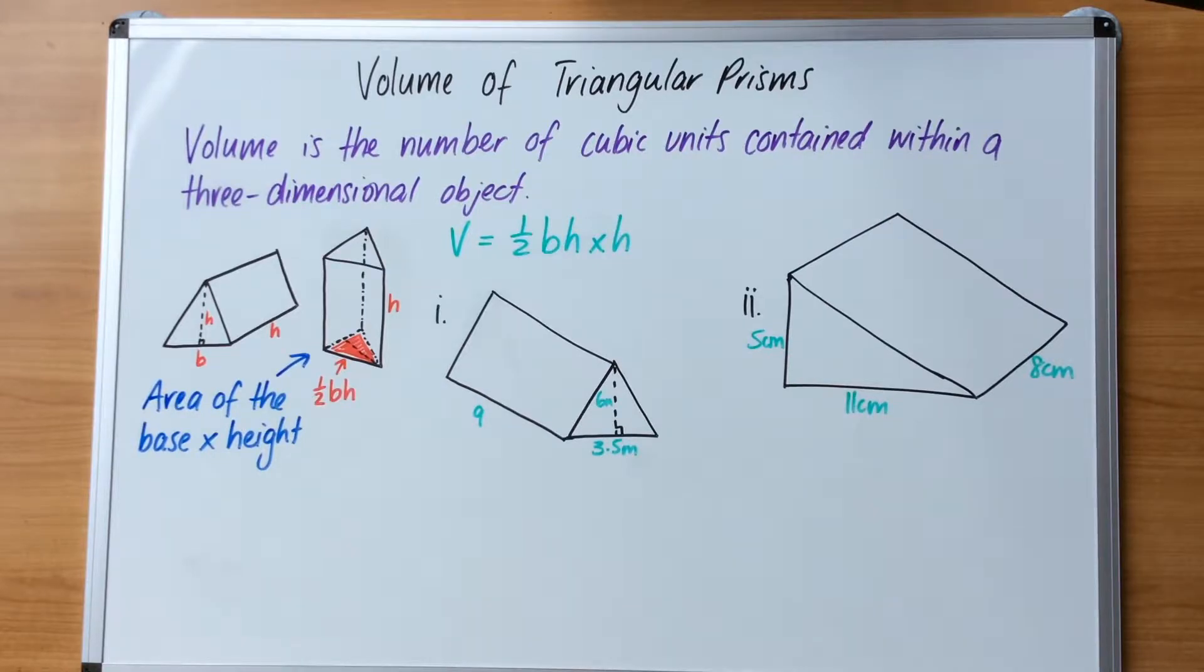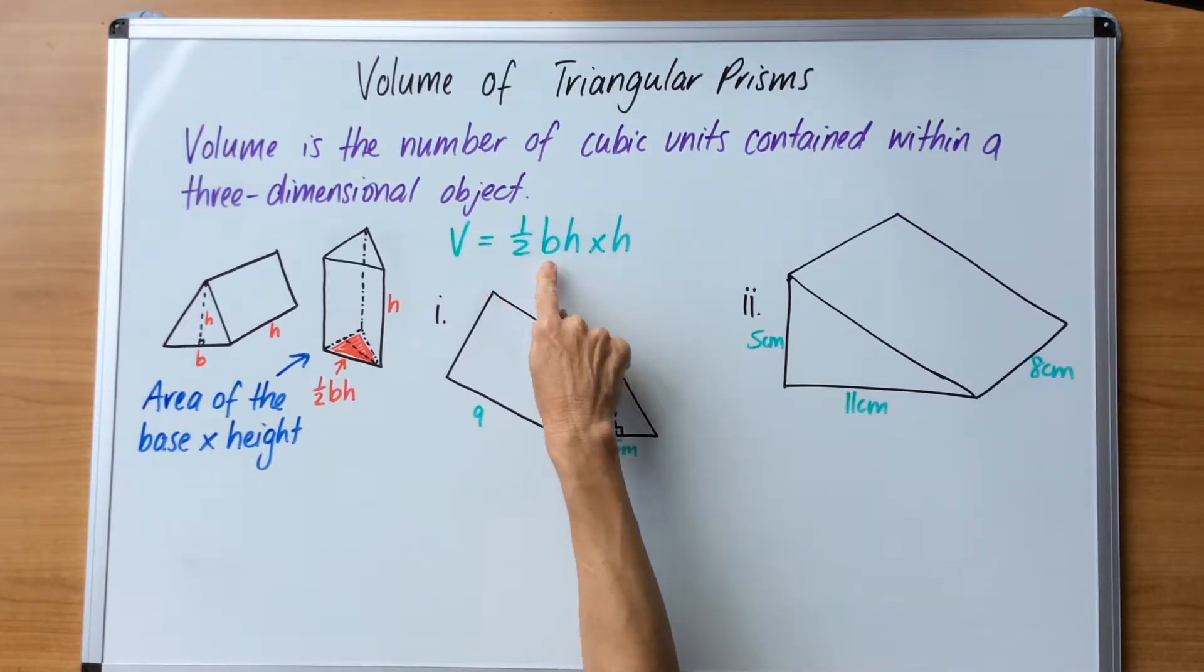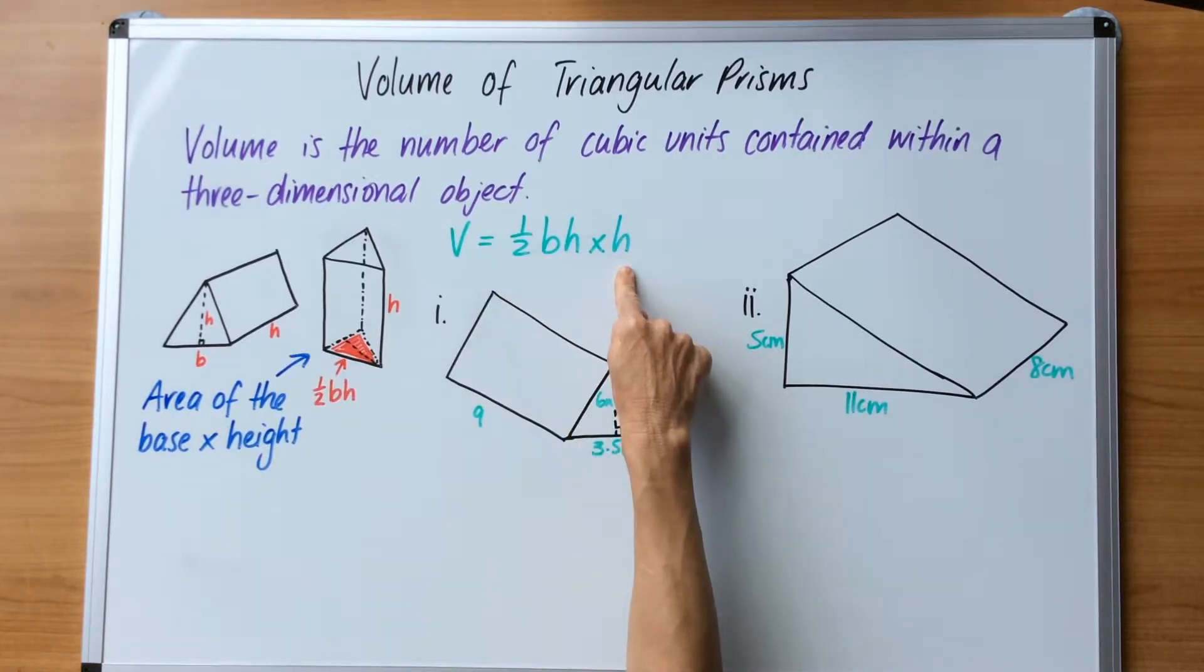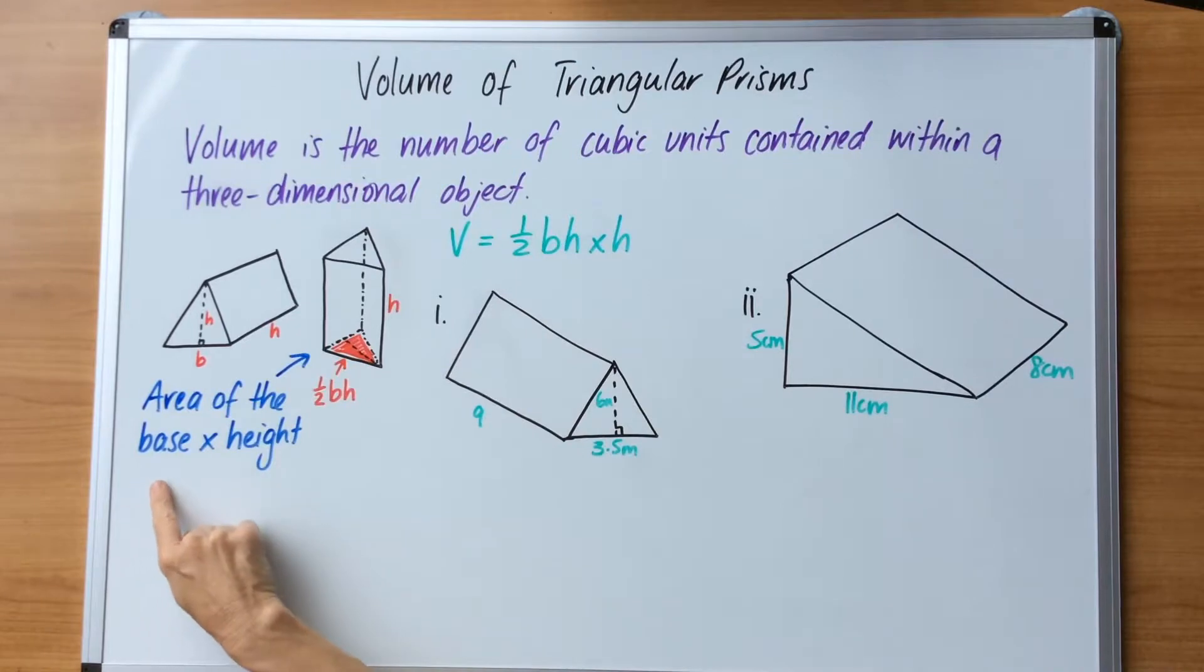The rule for volume of a triangular prism is V equals half base height times height. This means half base height, which is half times base times height (the area of a triangle), multiplied by the height of the prism. So the rule of thumb is area of the base times height.